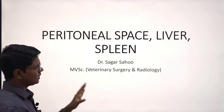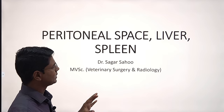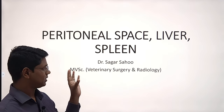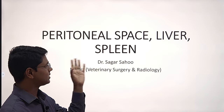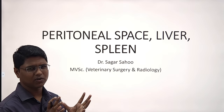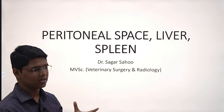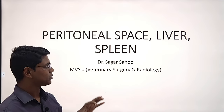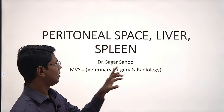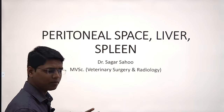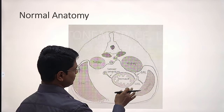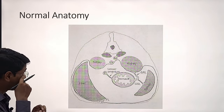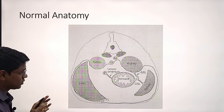So today we will be discussing the pathways of peritoneal space, liver, and spleen. Peritoneum is not actually an organ, but we will discuss the peritoneal space and also some organs under liver and spleen. Under liver we will also study the gallbladder. So first of all, we will study the peritoneal space. Before going to any radiology, you should know some basic anatomy.